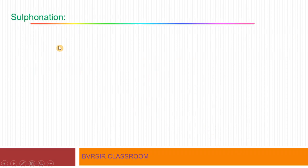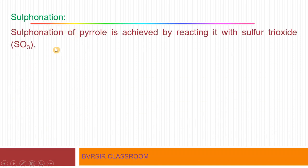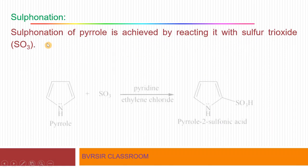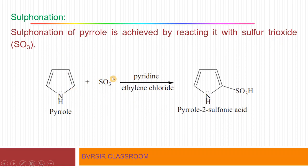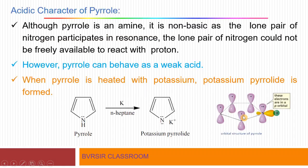Next is sulfonation — reaction with sulfur trioxide SO3. Sulfonation of pyrrole is achieved by reacting it with sulfur trioxide in the presence of pyridine. The hydrogen is replaced and the SO3H group attaches at the second position. The product obtained is pyrrole-2-sulfonic acid. So sulfonation reaction has been studied in detail.